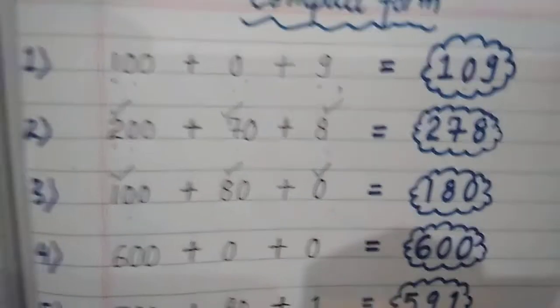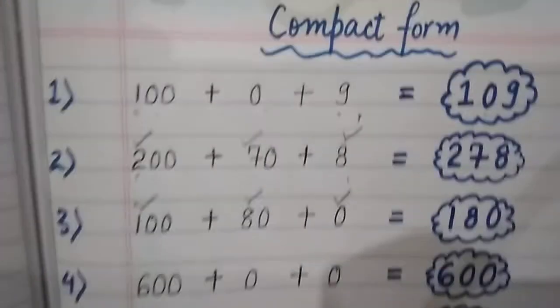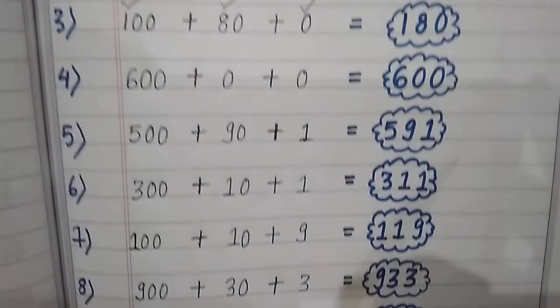So what do we do? We create a compact form. You have done this in your book. So now, all the questions you can write in your fair notebook.